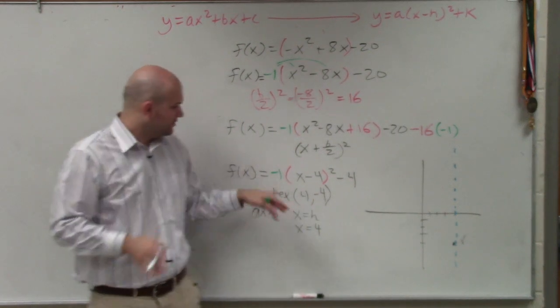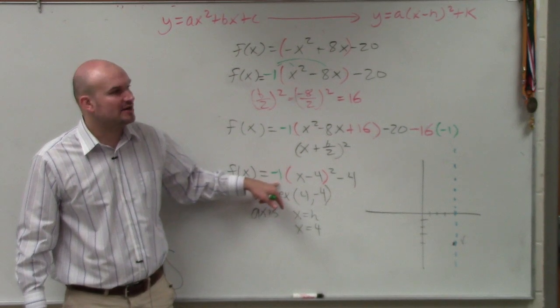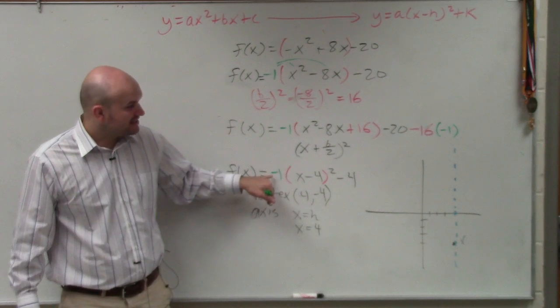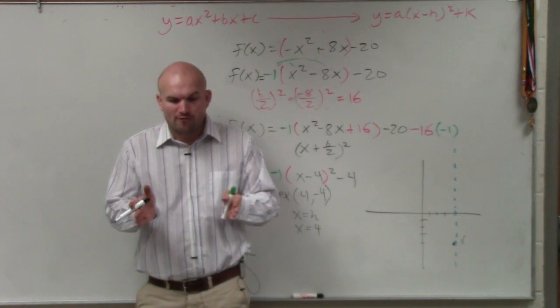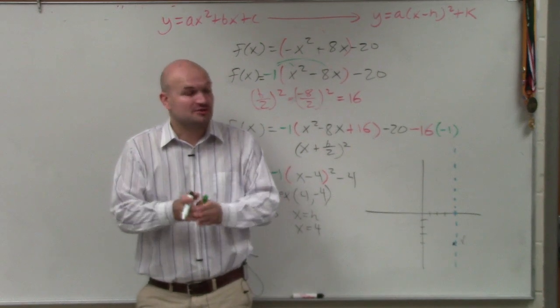It flips it. Right, instead of the graph opening up, now the graph is going to open down. So if you guys remember the parent graph, there's no compression though, right? Compression has to be when it's either greater than or less than 1. So absolute value of it is greater than or less than 1. So there's no compression. So basically, instead of going over 1, up 1, over 2, up 4,